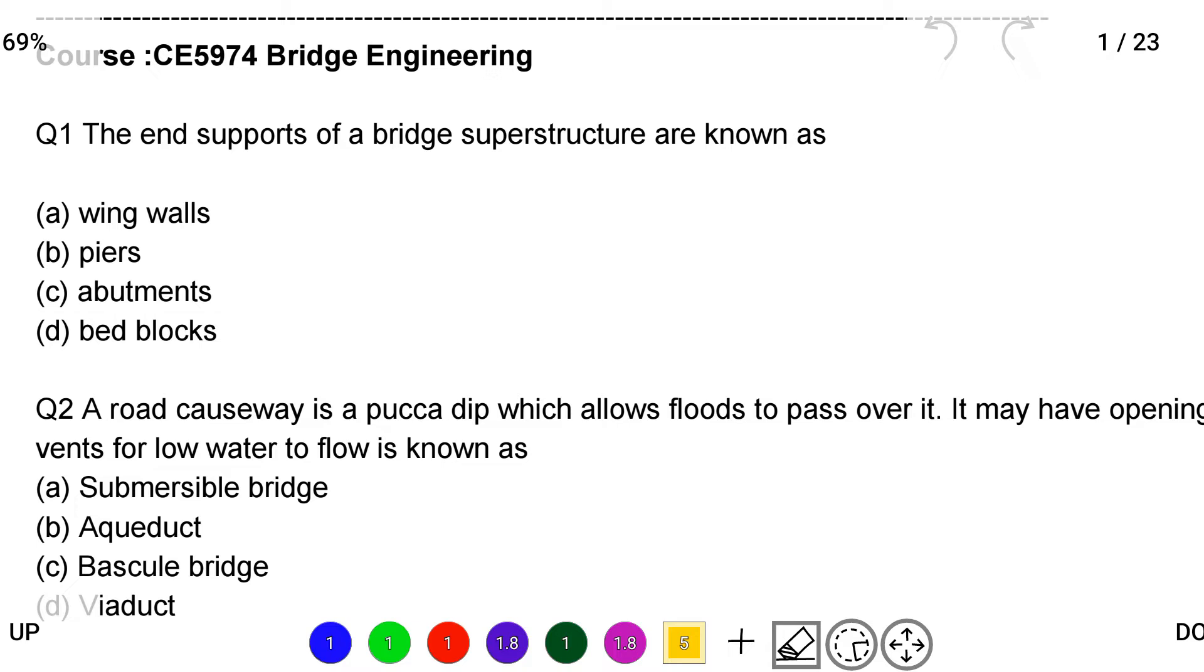So the first question: the end supports of the bridge superstructure are known as option A wing walls, option B piers, option C abutments, option D bed blocks. So the correct answer is option C abutments.